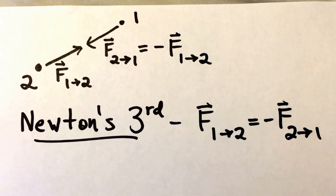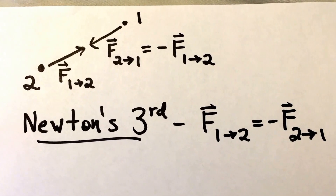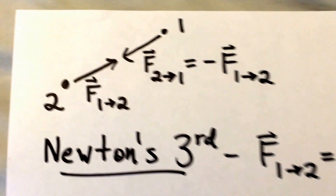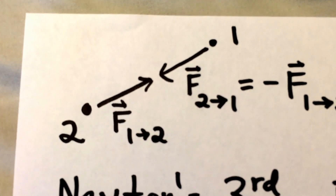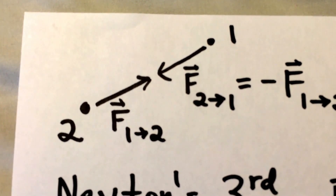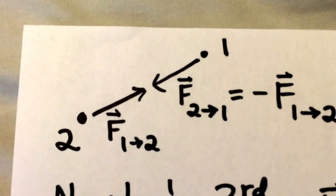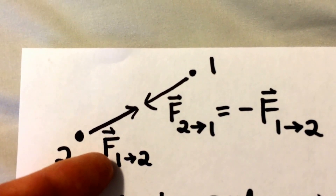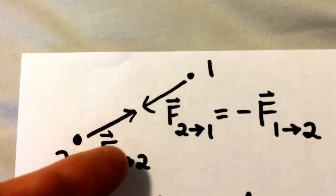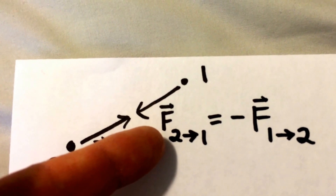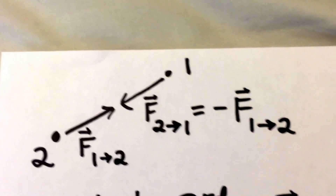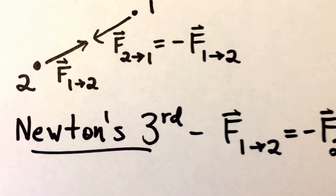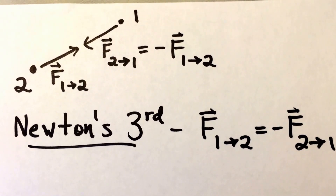In this section, we'll discuss Newton's third law. If you have two particles, particle one and particle two, the force of particle one on particle two is equal and opposite to the force of particle two on particle one. That's the essence of Newton's third law — that these forces are equal and opposite.